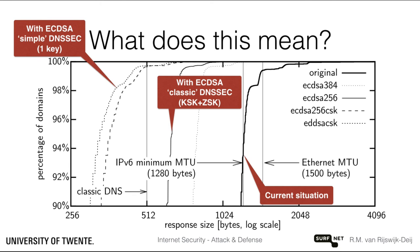And we can further improve this. Because elliptic curve cryptography provides stronger security, we can simplify the signing model for DNSSEC and use a single key, instead of the current practice of using two keys. This reduces the size of DNS key responses to such an extent that they might even fit in classic DNS packets of 512 bytes or less.